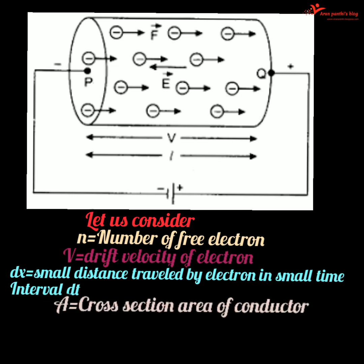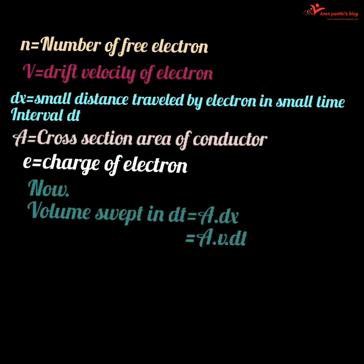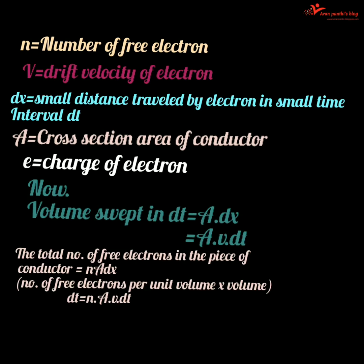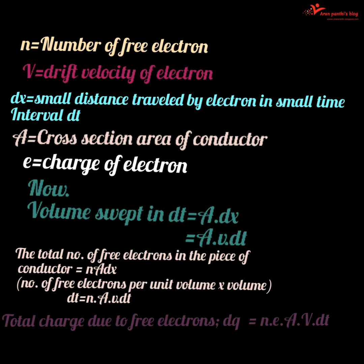Let A be the cross-sectional area of a conductor, and e be the charge of an electron. The volume swept in dt is equal to A·dx. Since V = dx/dt, we can write V·dt instead of dx. The number of electrons traversing across the dx section in small time dt is given by n·A·V·dt.